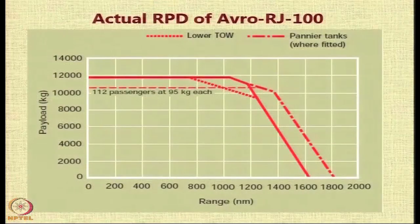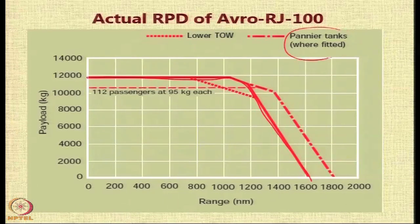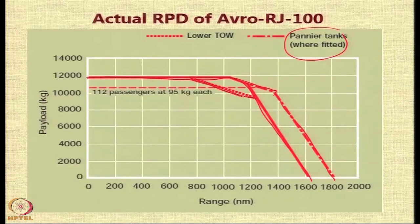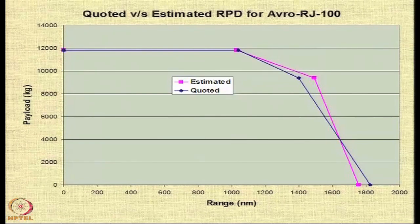Let us see the actual payload diagram of an Avro RJ 100. This is the basic diagram shown in dark red. When you install additional fuel tanks called pannier tanks, you can increase range by some amount, but you will hit the pannier tank limit soon and then can only travel further by reducing payload. A particular line corresponds to the range payload diagram where there is a constraint on the lower takeoff weight. The calculations show that the error between actual and computed values is not very different.